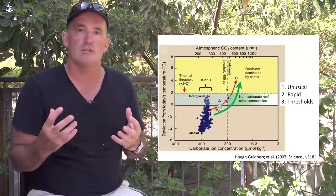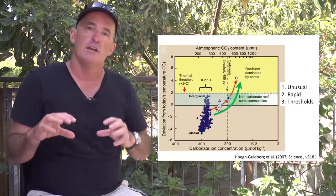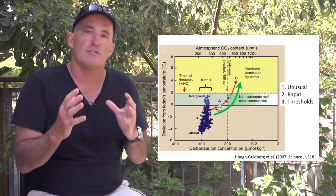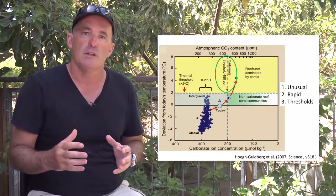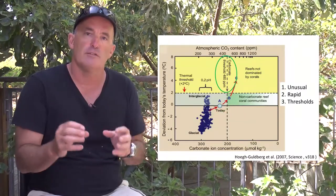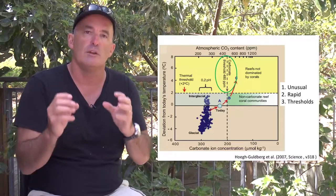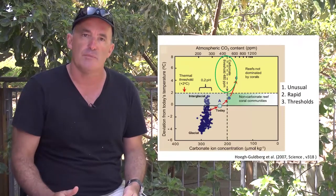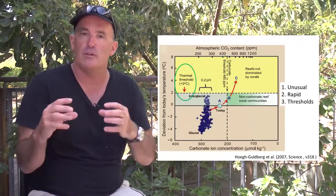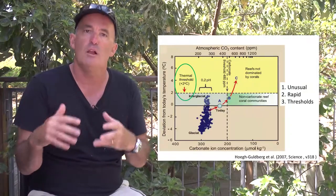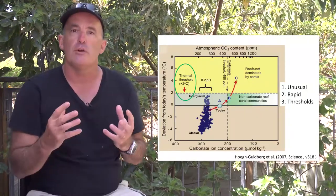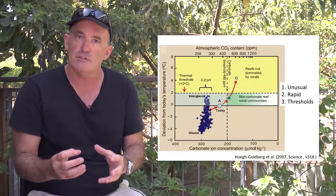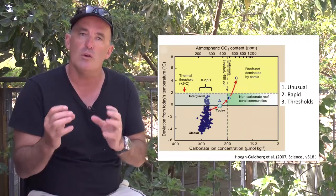Secondly, the rates of change in temperature and the carbonate ion concentration are the highest over this period of time. And lastly, tropical oceans are rapidly approaching two important thresholds: the first being the concentration of carbonate ions at which carbonate reef systems will no longer be able to be maintained by the calcification of corals and red coralline algae; the second being the thermal threshold above which corals will experience annual mass coral bleaching and mortality. Our current climate change trajectory is pushing coral reef ecosystems closer to a point at which they will no longer be coral dominated.